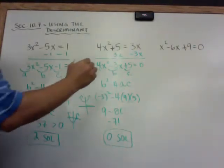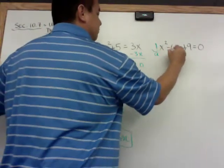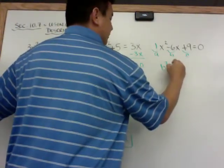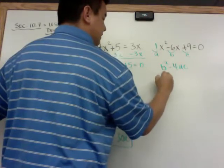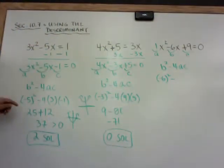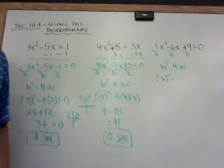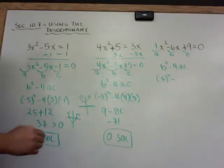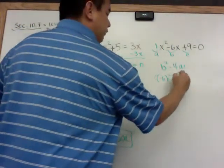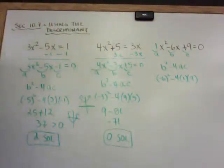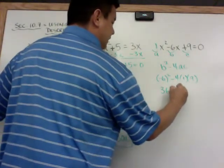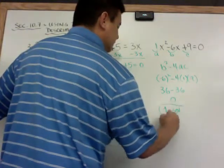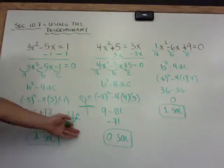Here's my last example. A is 1 (the invisible coefficient), b is negative 6, and c is positive 9. I compute b squared minus 4ac. B is negative 6, so negative 6 squared in parentheses — always use parentheses when substituting — gives positive 36. Minus 4 times 1 times 9 is 36. So 36 minus 36 equals 0. Therefore I have one solution. So we've now seen an example with two solutions, zero solutions, and one solution.